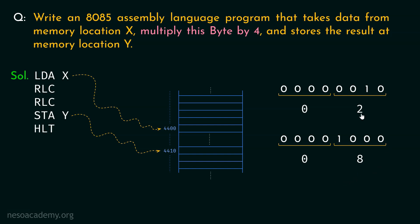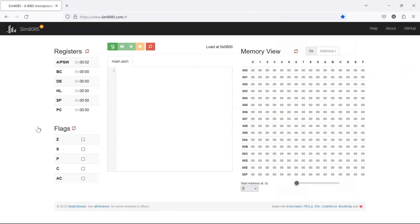That's evident because if you multiply 2 by 4 you get 8, so output 08H is correct. Within memory location 4400H we load 02H, and after execution of this program — where we update memory locations X and Y respectively — within memory location 4410H we should get the data 08H. Let's now execute this program in the emulator. In the previous session we had a detailed walkthrough of this emulator; I encourage you to go through the previous session so that you can operate it.